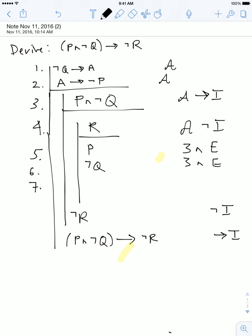So line 7 is going to be A, and that comes from 6 and 1. It's just an application of the conditional elimination rule. So let's do that. Let's put that in our notation. Line 7 comes from 1 and 6 by conditional elimination.